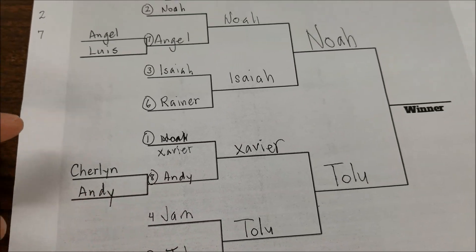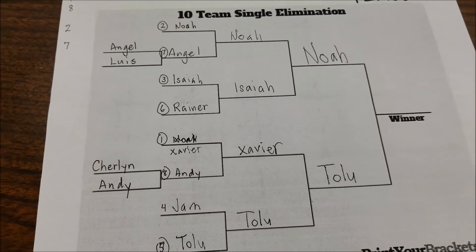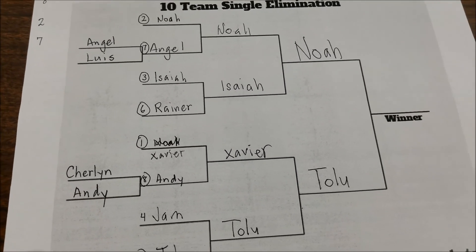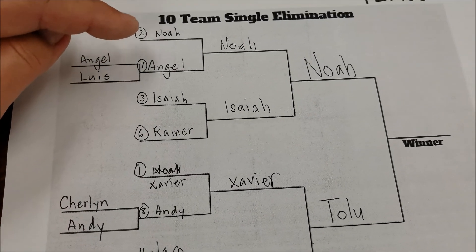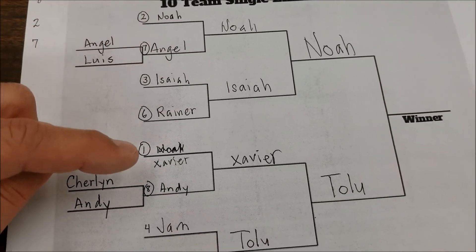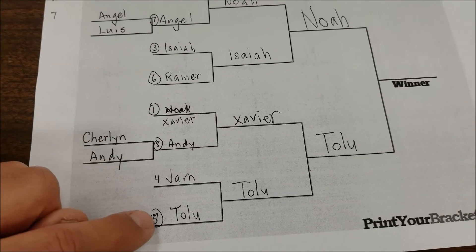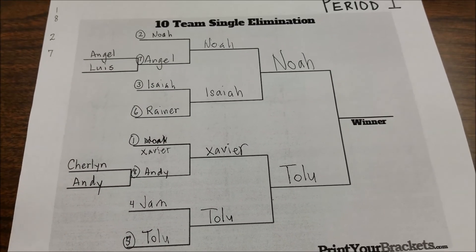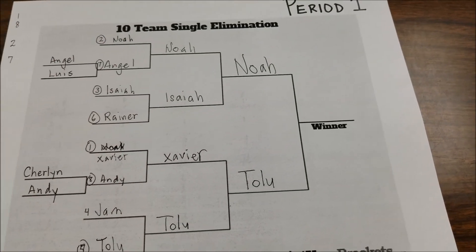Basically it just makes things a little more fun and includes more teams. Then I do it like the NBA: team number two plays seven, three plays six, one plays eight, four plays five — and then they just move on from there until we get a champion.